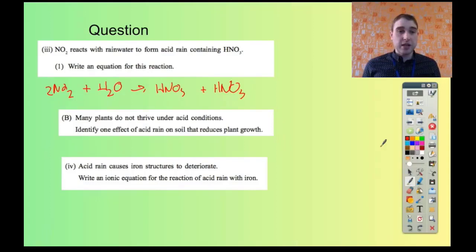The last part says acid rain causes iron structures to deteriorate. Write an ionic equation for the reaction of acid rain with iron.